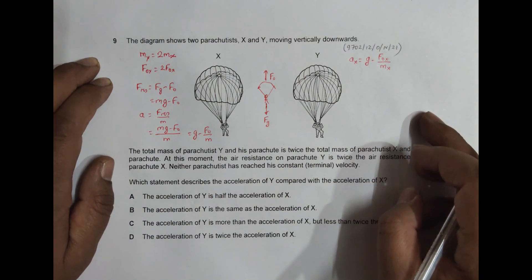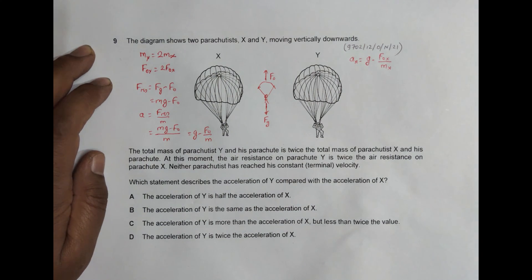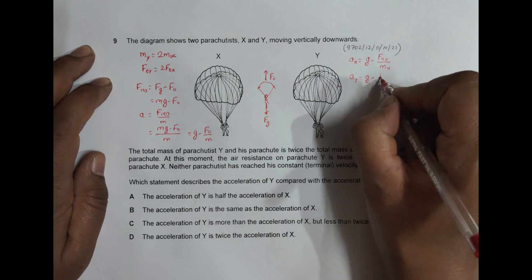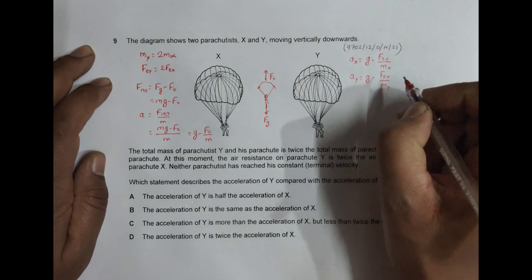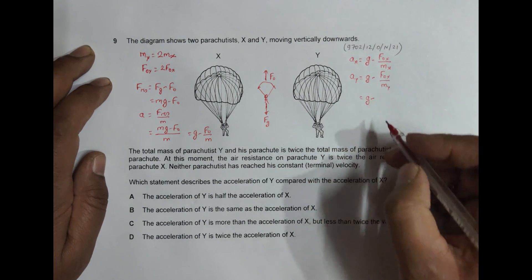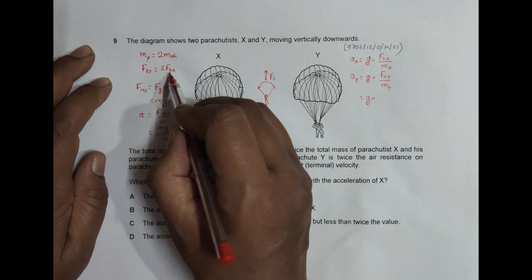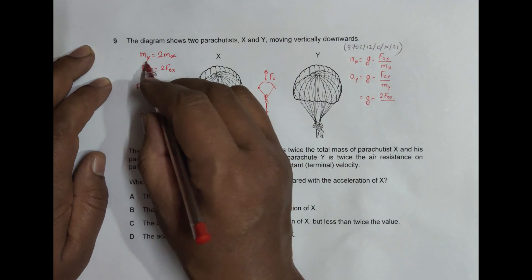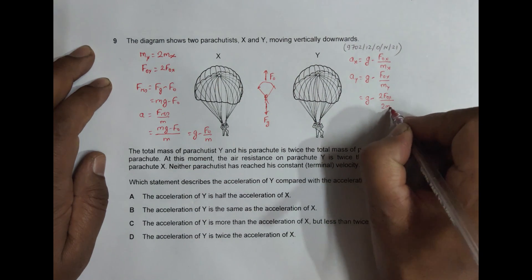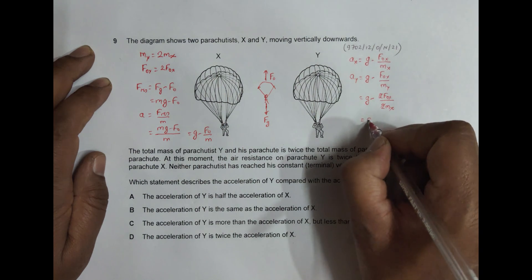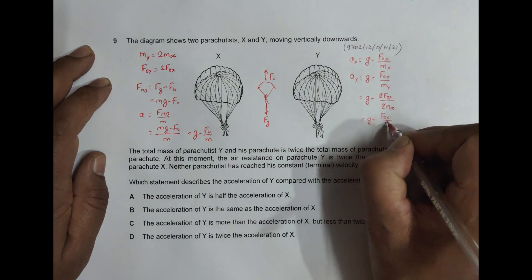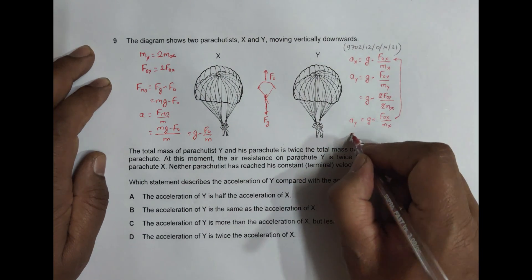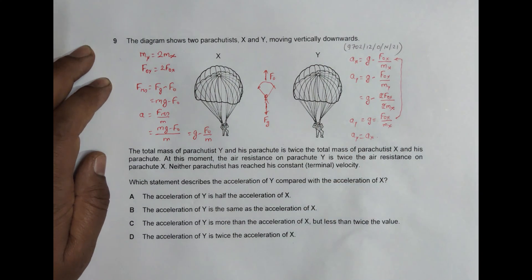For parachutist Y: acceleration of Y equals g minus Foy divided by my. Now substituting — Foy equals twice Fox, and my equals twice mx — we get g minus 2Fox over 2mx. The two's cancel, giving g minus Fox over mx, which is the same as the expression for ax.